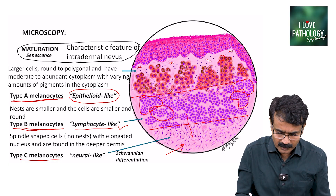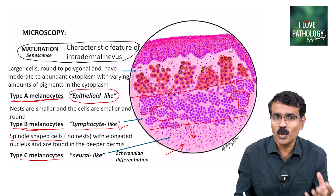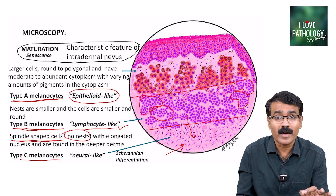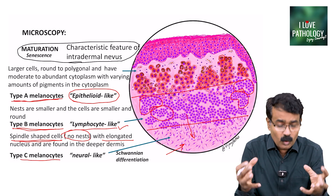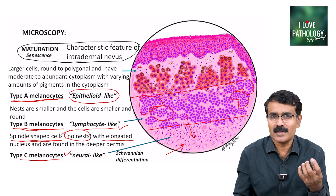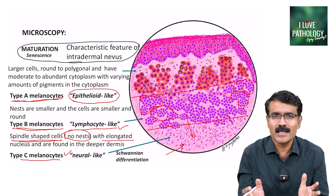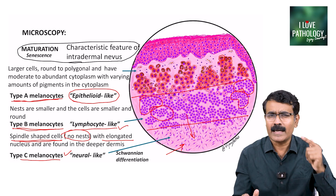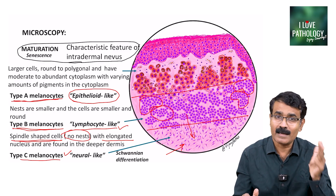Type C melanocytes, found in the deeper dermis, are spindle-shaped cells. There are no nests as you find in type A and type B — they are haphazardly scattered, spindle-shaped cells with elongated nucleus, and they look like neural cells. Type C melanocytes are neural-like because they have a Schwannian differentiation. So histologically, remember three points: they are circumscribed lesions, they are symmetrical lesions, and there is orderly maturation from top to bottom — type A epithelial-like, type B lymphocyte-like, and type C neural-like melanocytes.